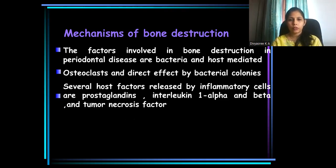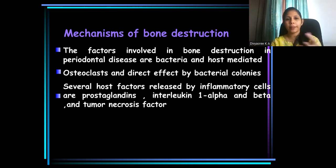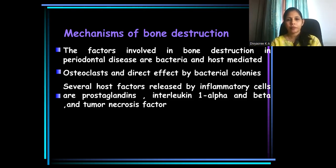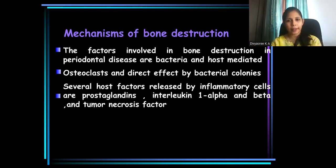So what happens in bone destruction? Once the inflammatory infiltrate is involved in bone destruction, which inflammatory mediators are involved? We know that osteoclasts are the cells involved in bone destruction. Apart from that, several toxic mediators and inflammatory mediators produced from the microbes can also directly result in bone destruction.